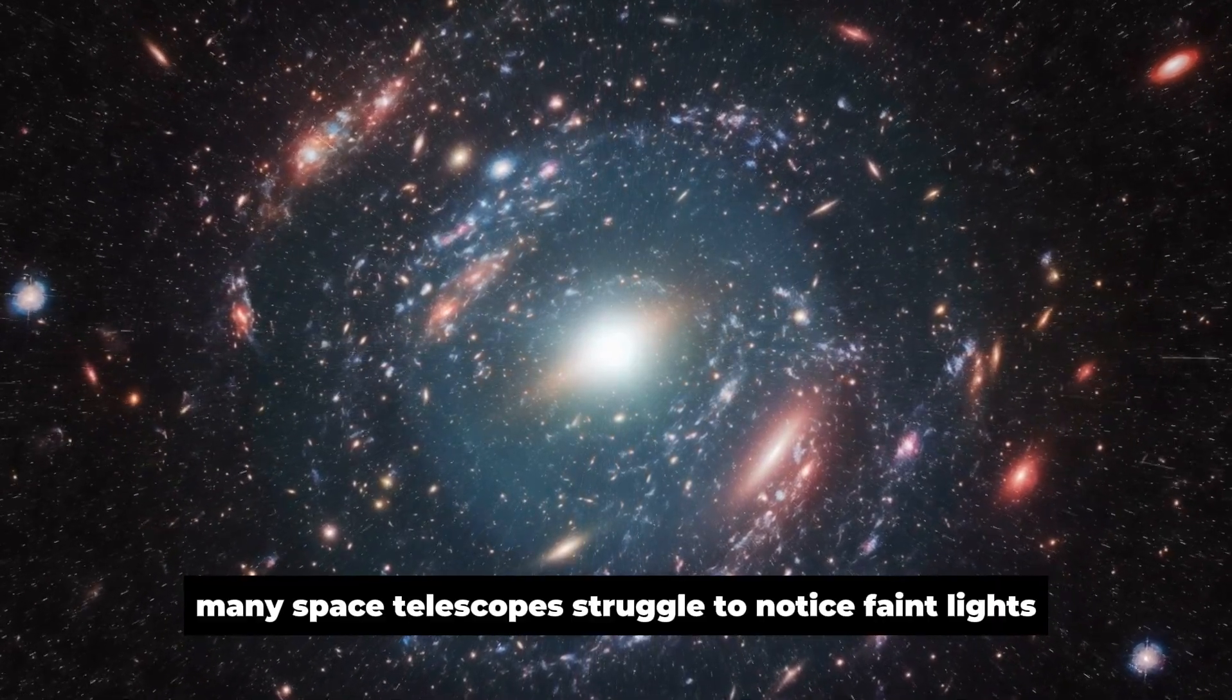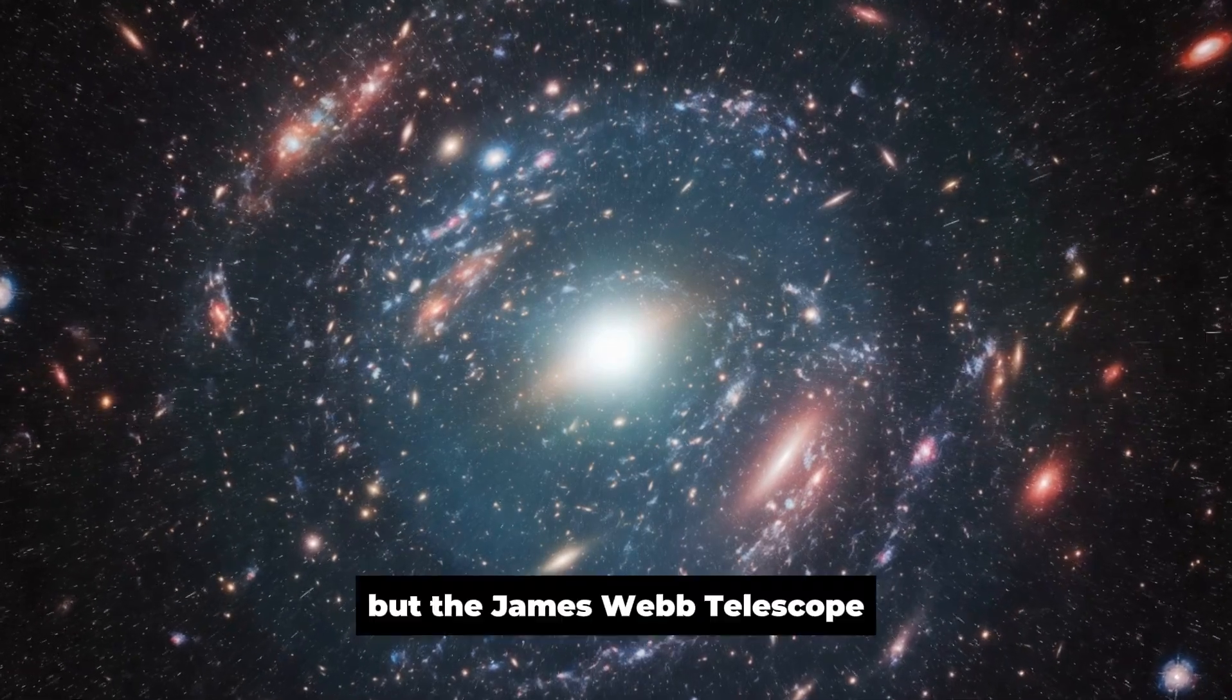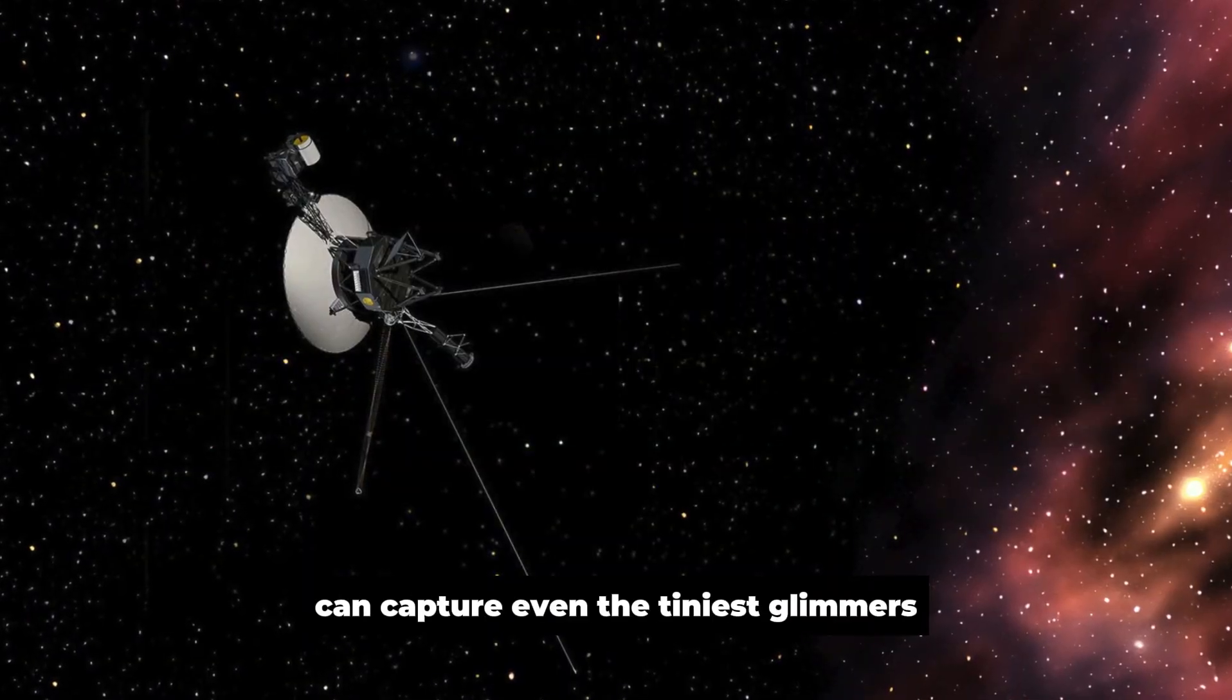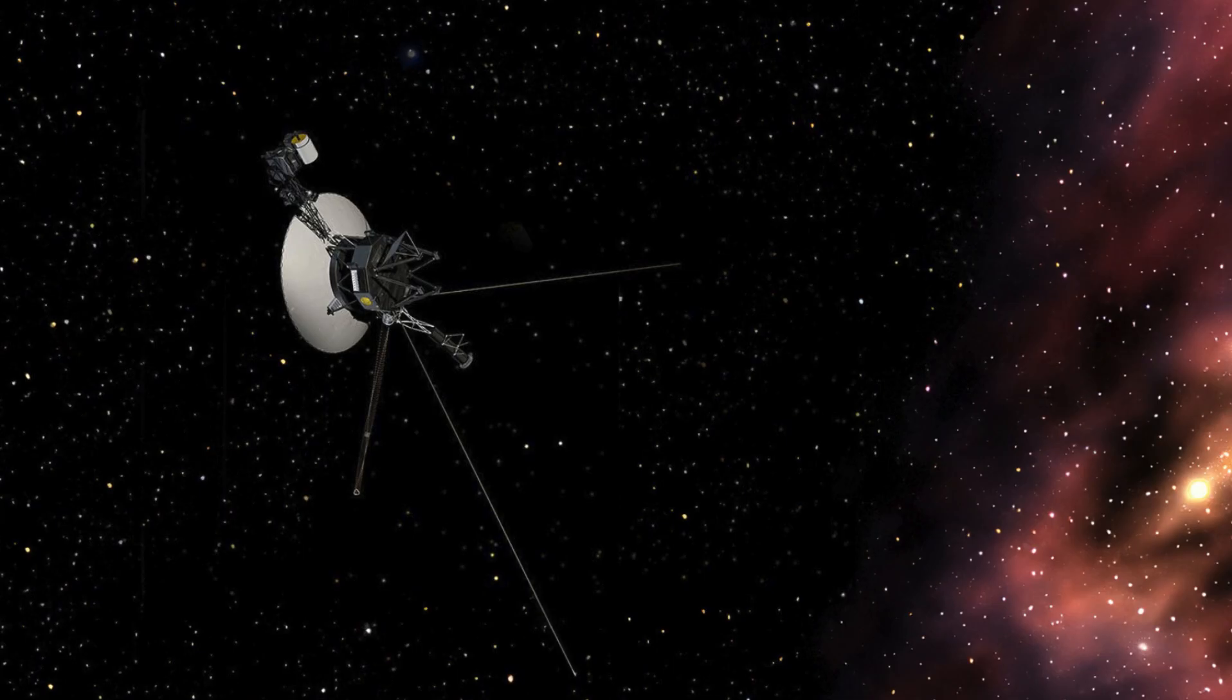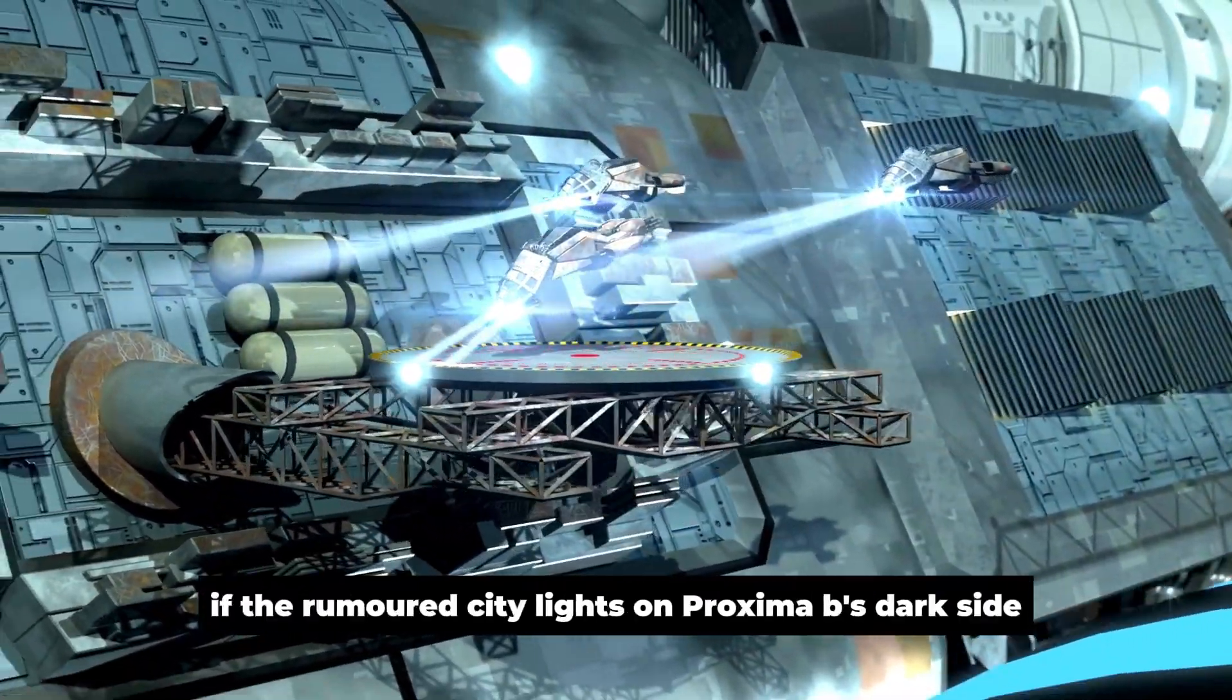Many space telescopes struggle to notice faint lights in the vast darkness of space. But the James Webb Telescope can capture even the tiniest glimmers. This makes it ideal for checking if the rumored city lights on Proxima b's dark side are real.